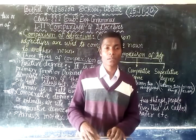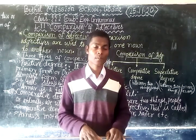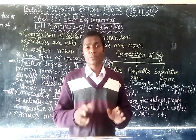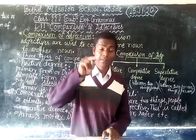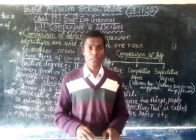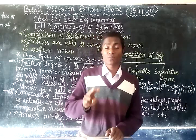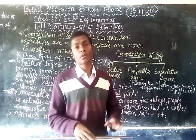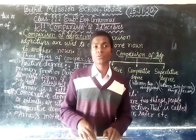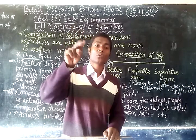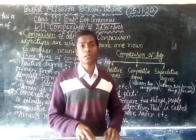Now let us move to comparative degree. Whenever we compare two things, we add '-er' at the end of the adjective. For example, 'tall' becomes 'taller' by adding ER at the end. 'Big' becomes 'bigger' by adding ER at the end. This is how comparative degree works.